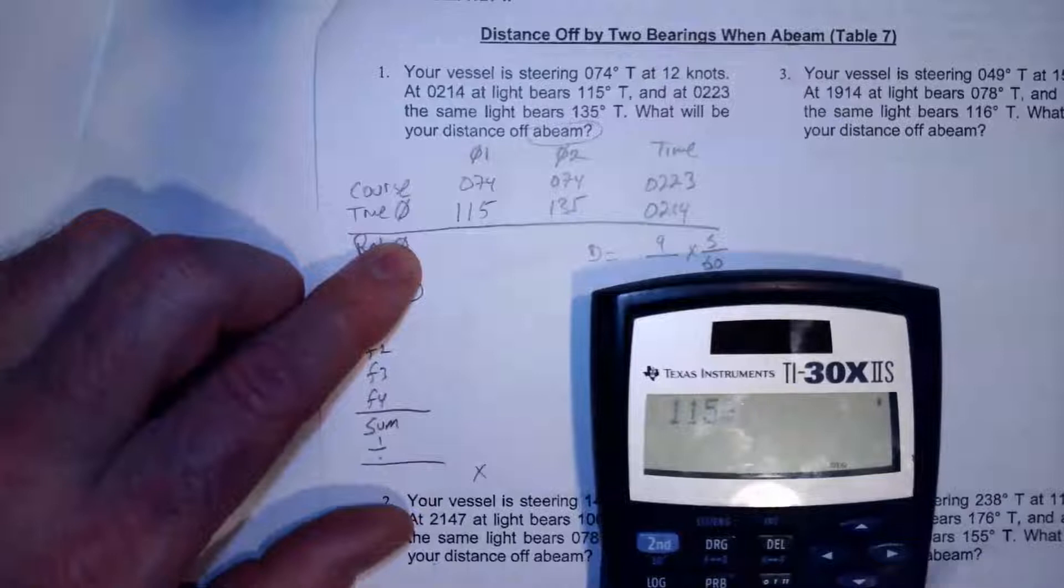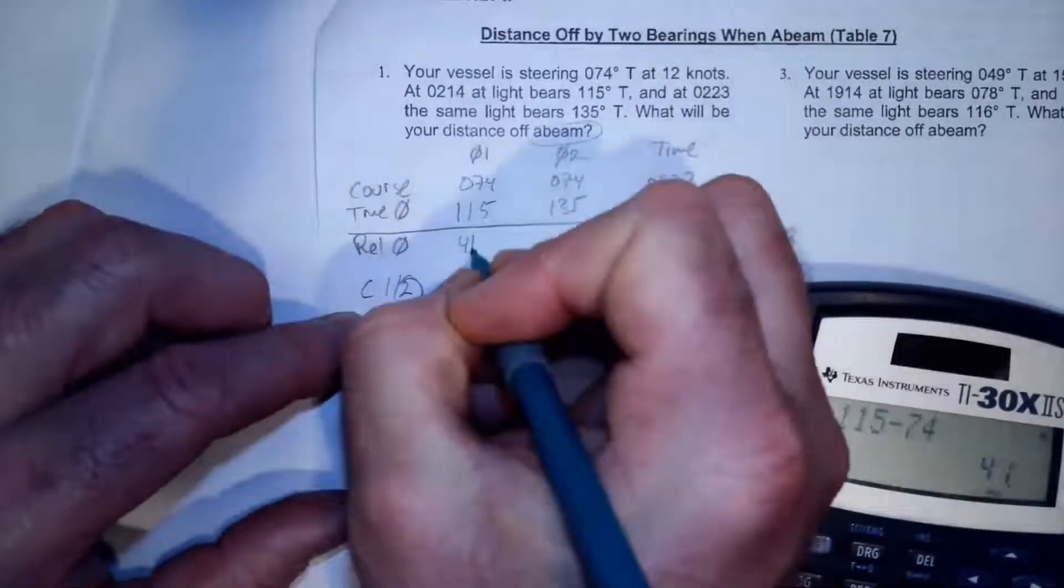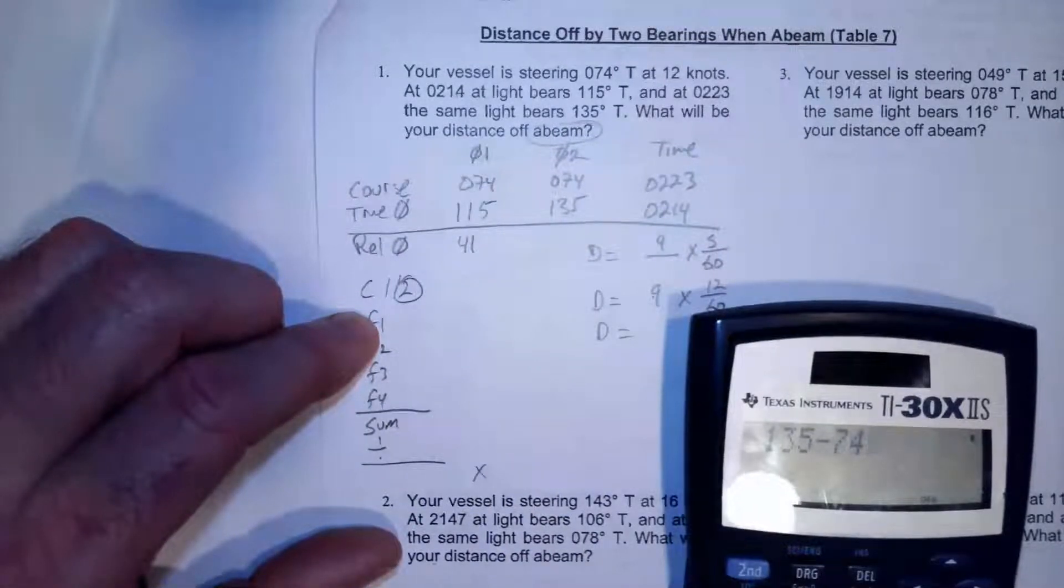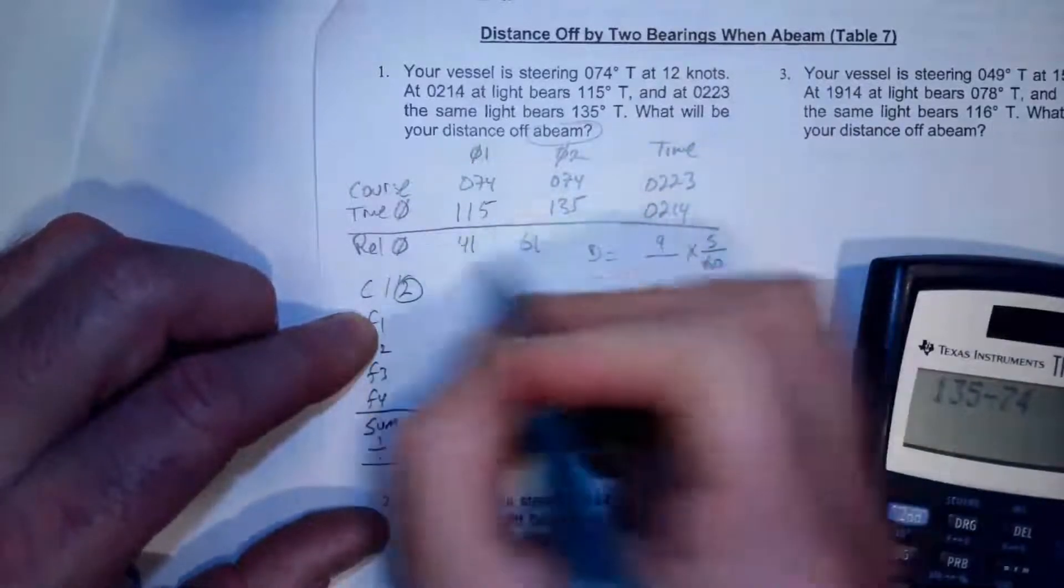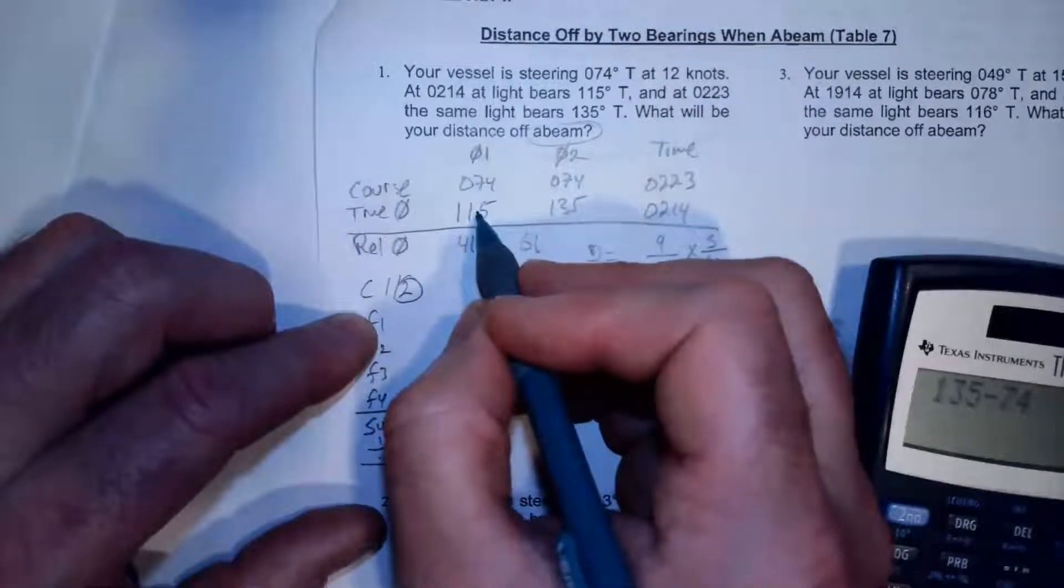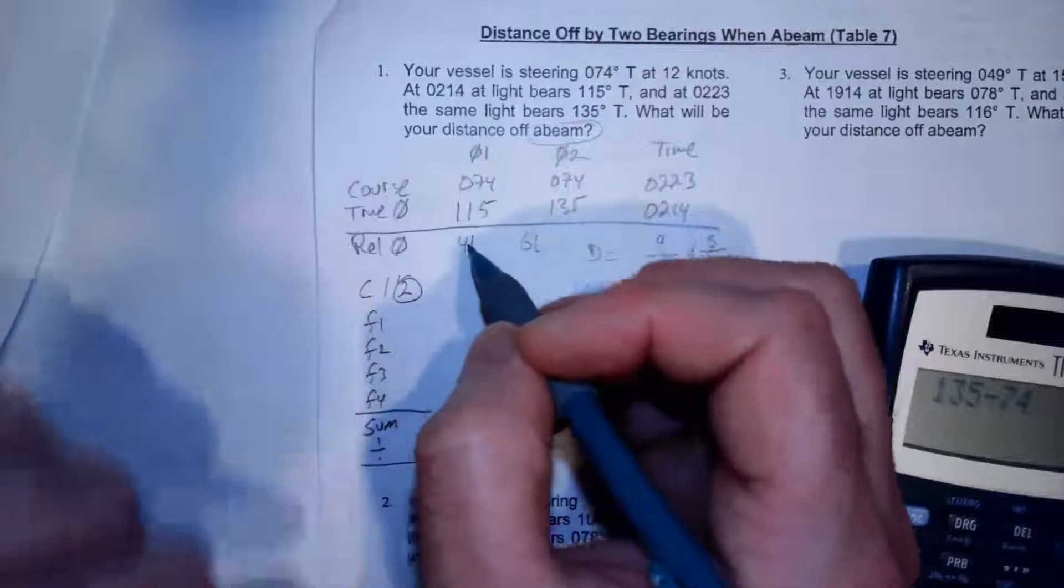So 115 minus 74, that's 41. And 135 minus 74, that's 61. Now these are the relative bearings. That's my course. That was the bearing off the, that was the true bearing. And I just calculated the relative bearing off the bow by doing that math.